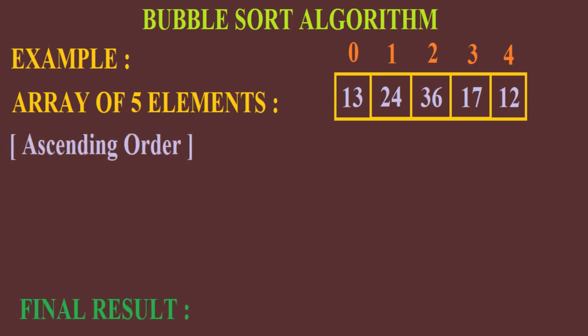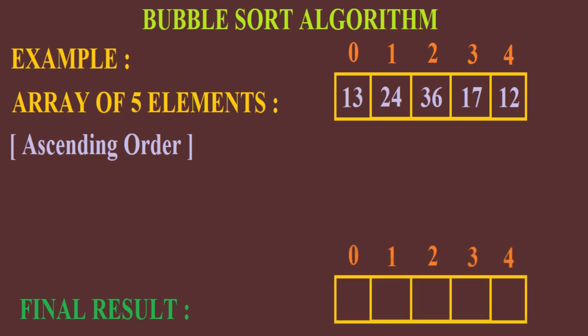The final result after bubble sort will be the array: 12, 13, 17, 24 and 36. Bubble sort is the simplest sorting algorithm that works by repeatedly swapping the adjacent elements if they are in wrong order. This swapping is done by comparison.